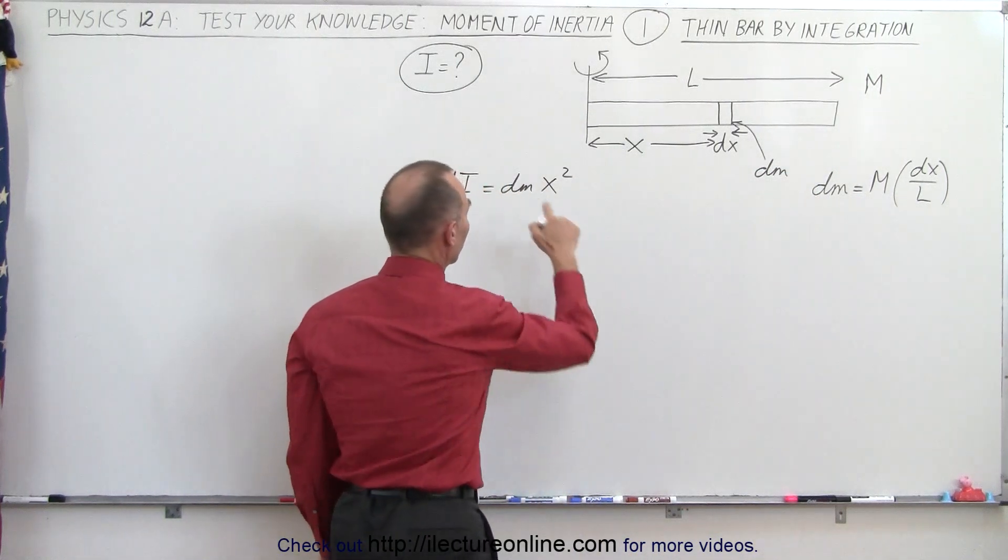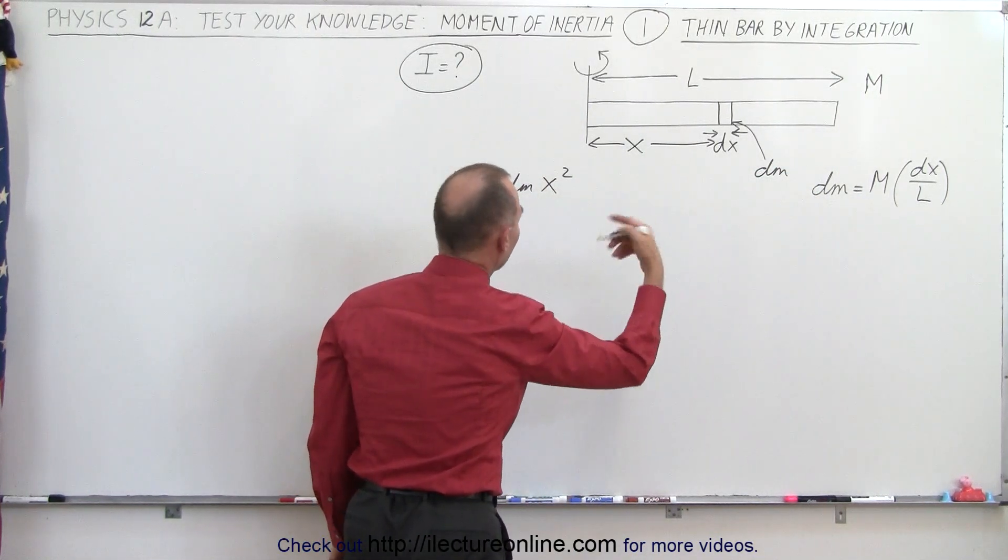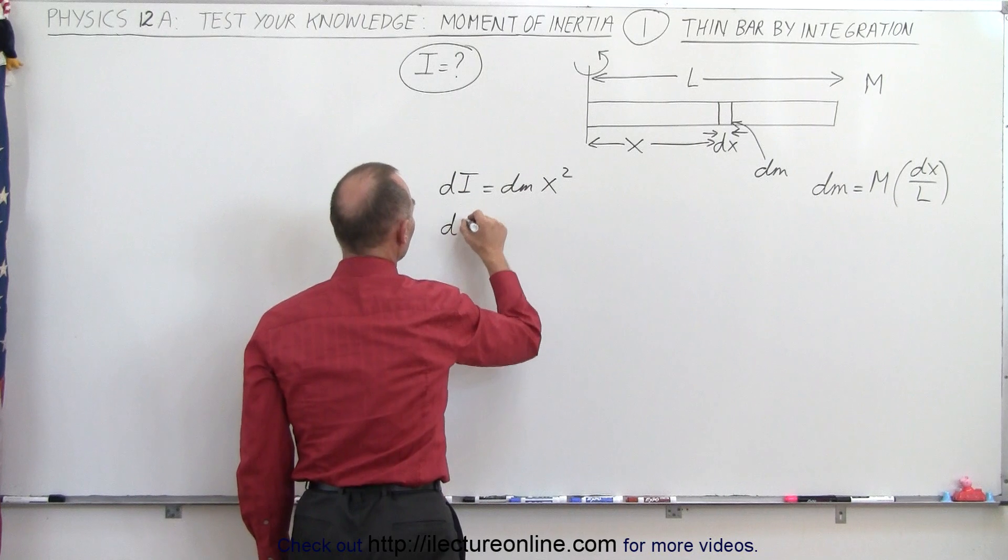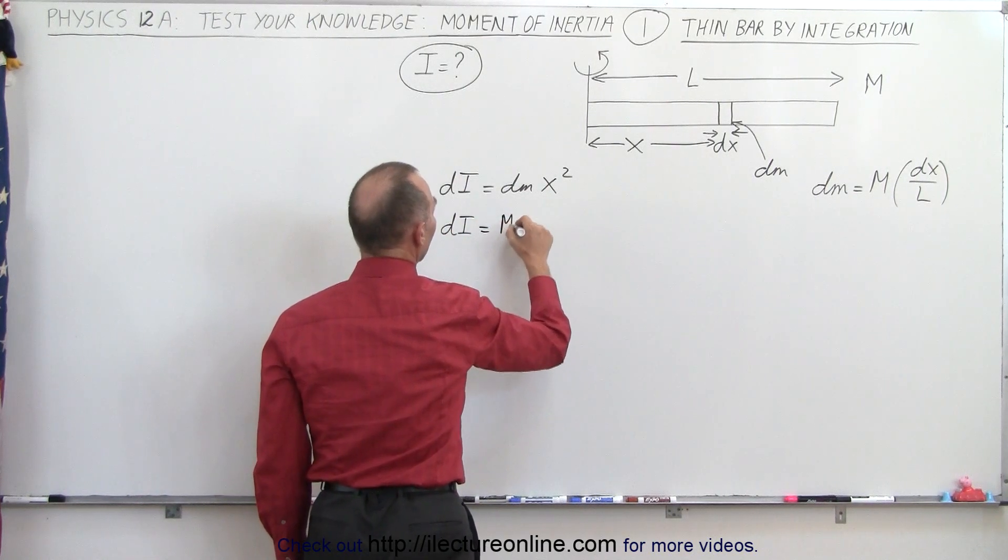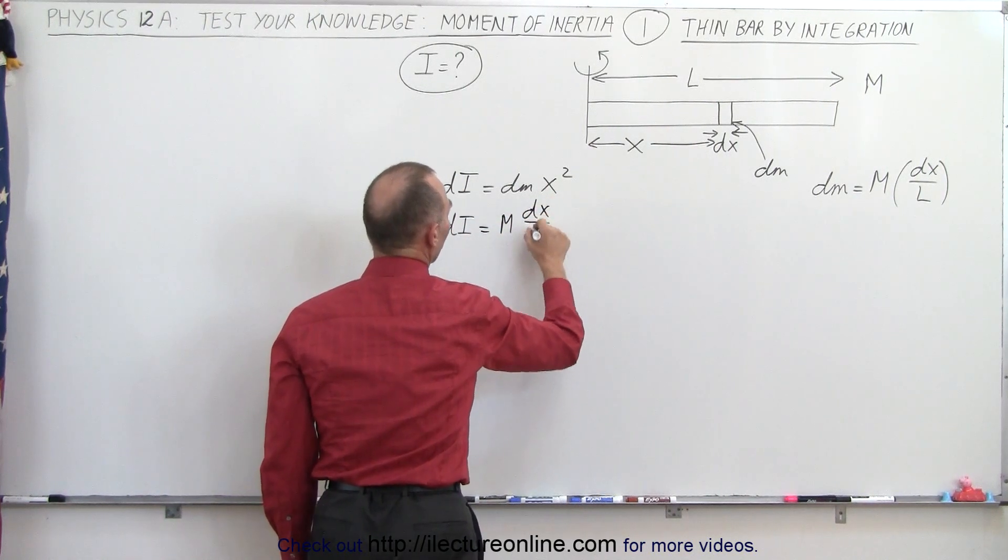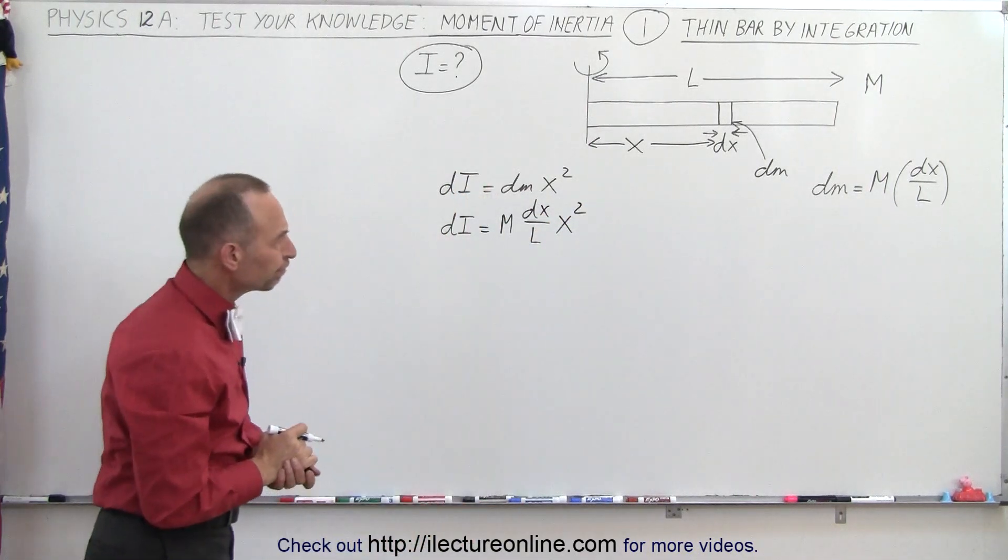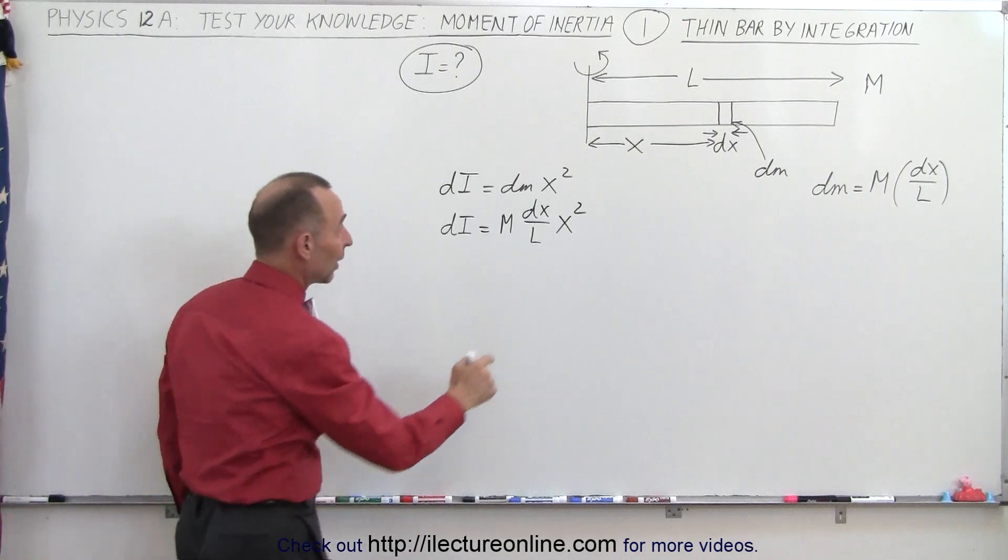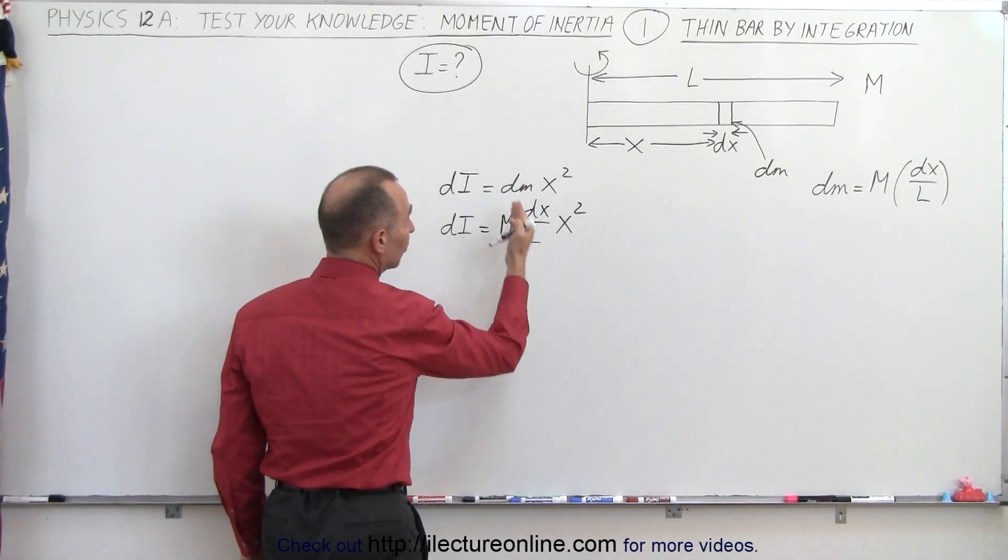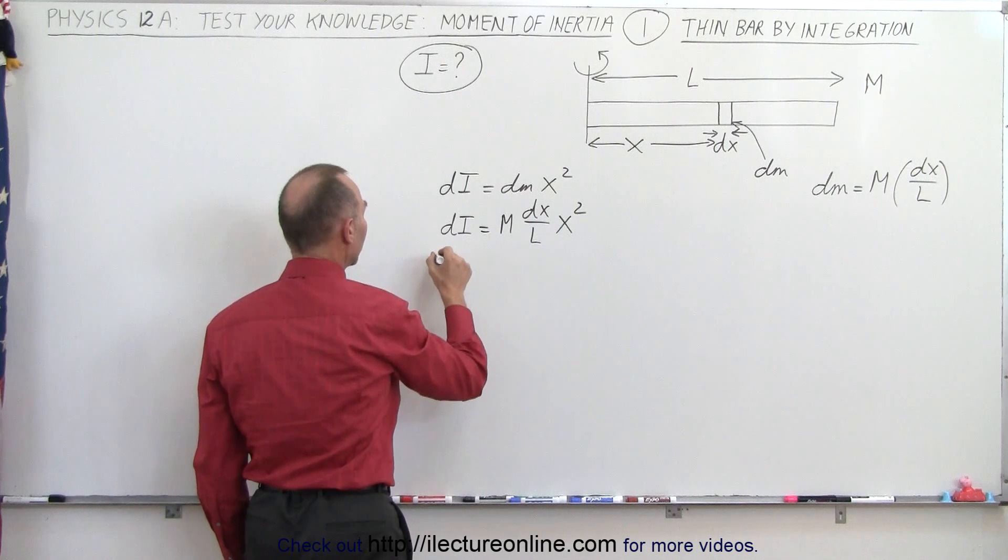So that means we can replace dm by that, and then notice what we have. dI is equal to M times dx over L times x squared. Now notice on the right side we have an x and the dx, which is good, M and L are constants. So now we can go ahead and integrate.